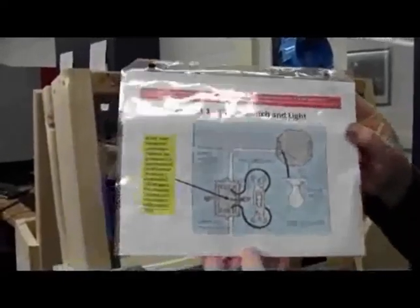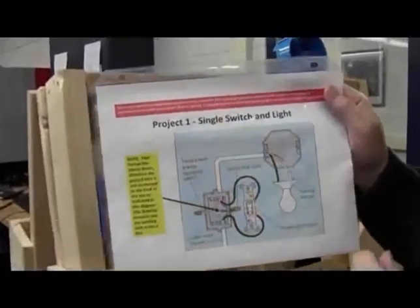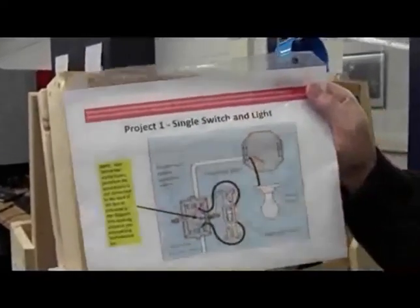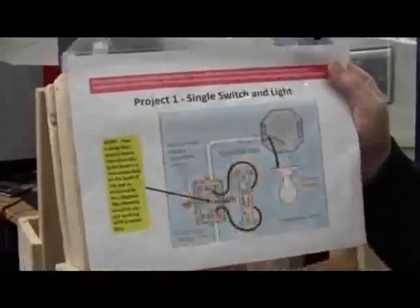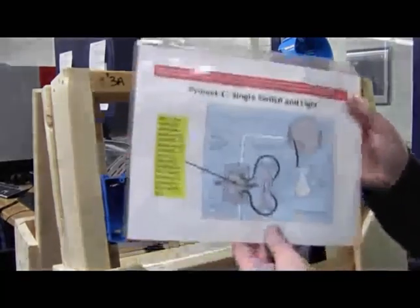This tutorial is going to take us through the process of creating project number one, which is the single switch and a light. Let me just quickly take you through this little diagram, and this will be located clipped to the front of your wiring trainer here.